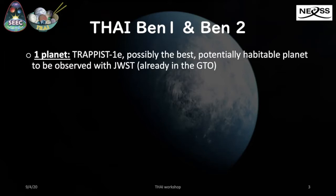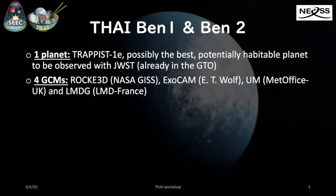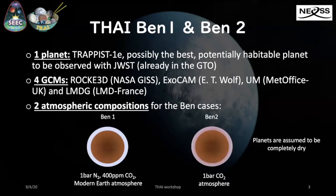As a reminder, TAI focuses on simulation of one planet, TRAPPIST-1e, which is potentially the best potentially habitable planet to be observed with the James Webb Space Telescope — it's actually already in the guaranteed time observer, the GTO. The idea of TAI is to simulate this planet with four different GCMs, global climate models. In this first part of the intercomparison project, two atmospheric compositions are considered. We call them benchmark one and benchmark two, simulating the planet with the physical properties of TRAPPIST-1e in terms of mass, radius, and insulation, but assuming a completely dry planet — in the first case with a modern Earth atmosphere, and in the second case with a one-bar CO2-dominated atmosphere.